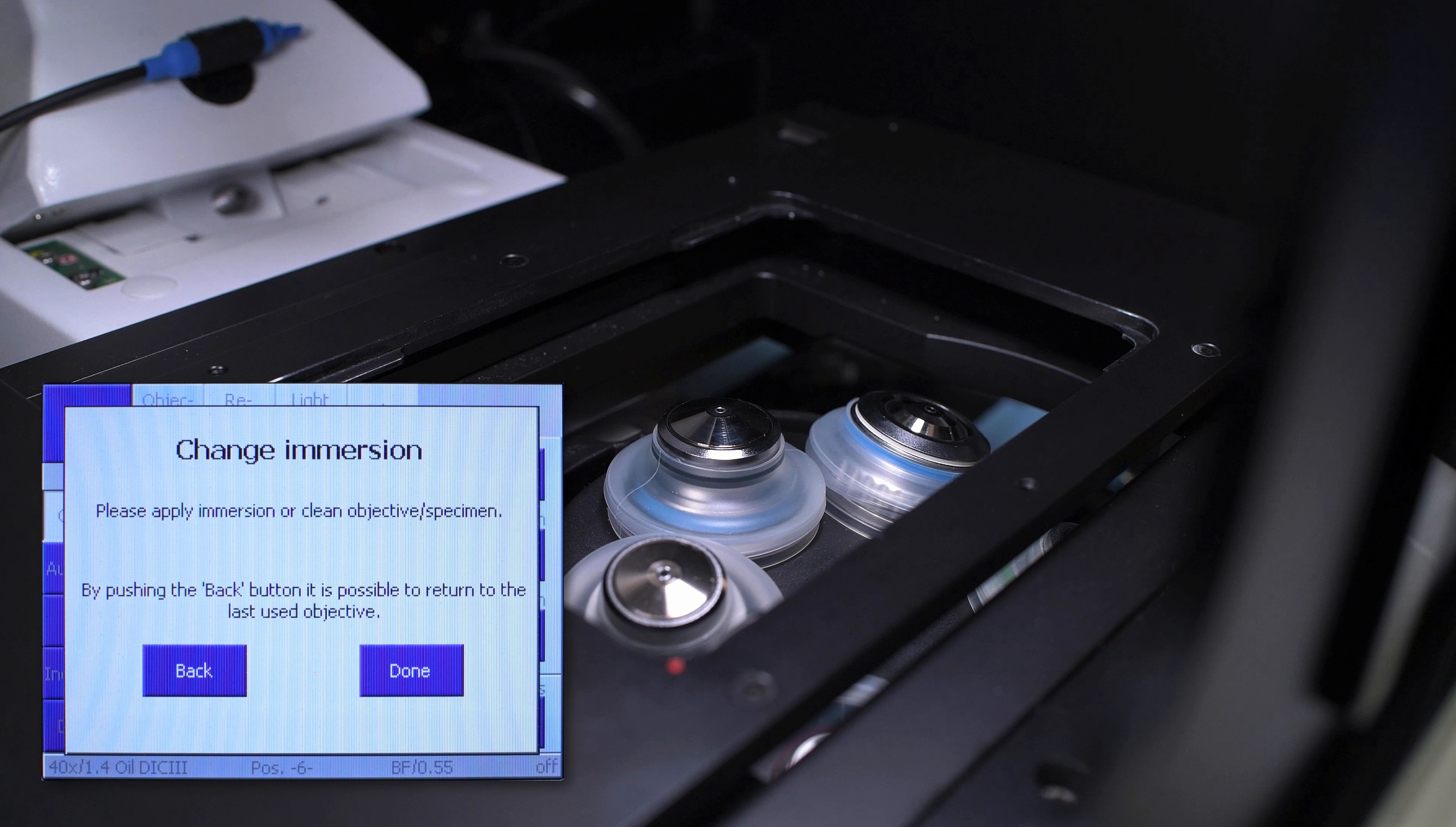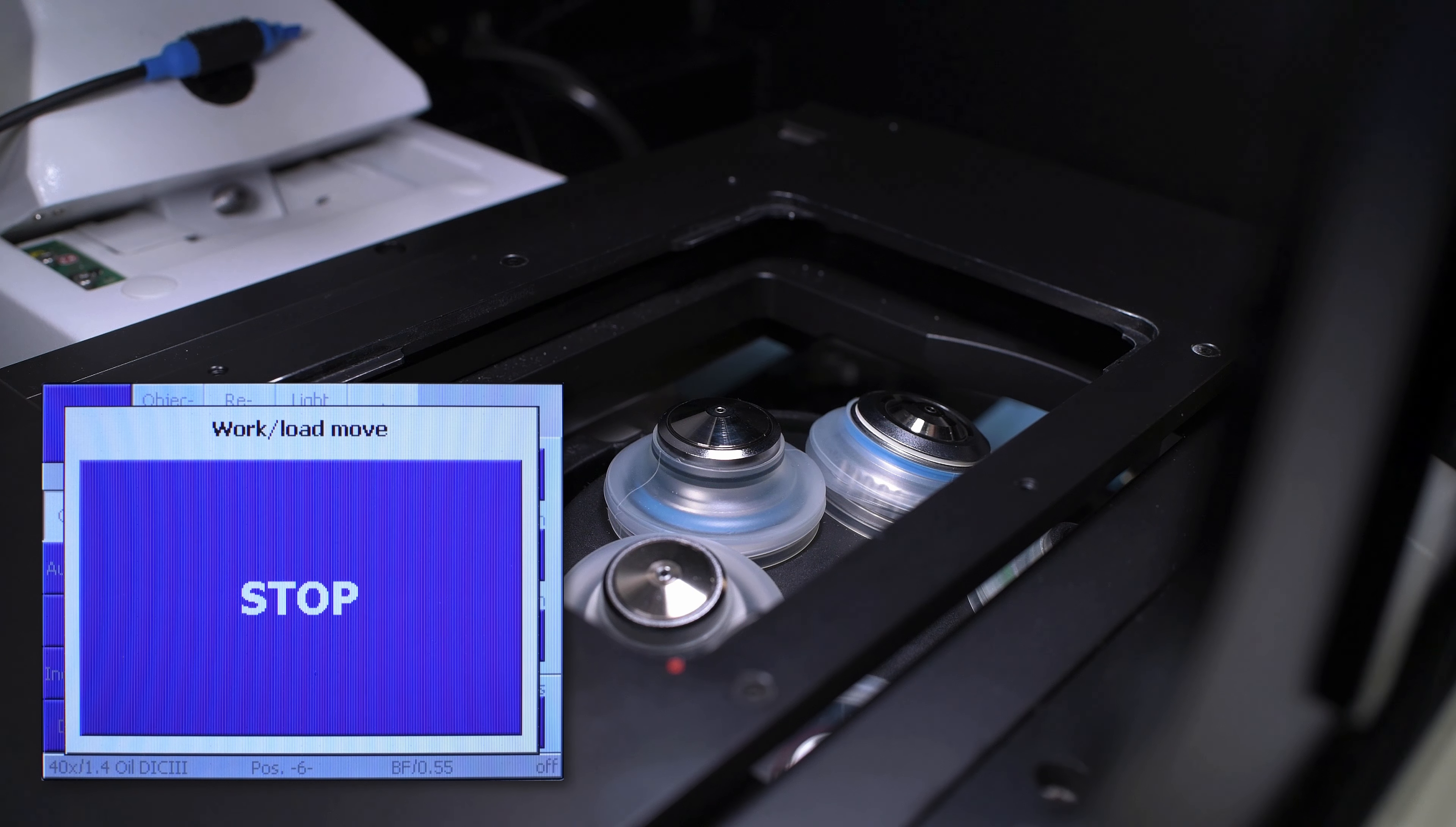They are not sealed like immersion optics, so you can easily cause expensive damage to these lenses by getting oil or water on them. Do not under any circumstance move the objective turret from a low magnification dry objective to an immersion objective without first removing your sample. With no specimen in place, it is safe to click done.